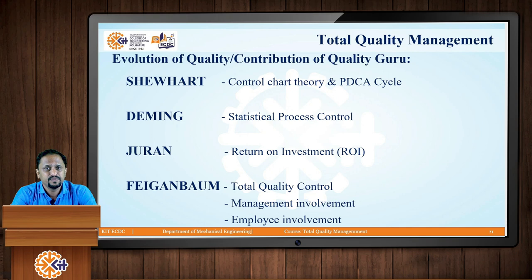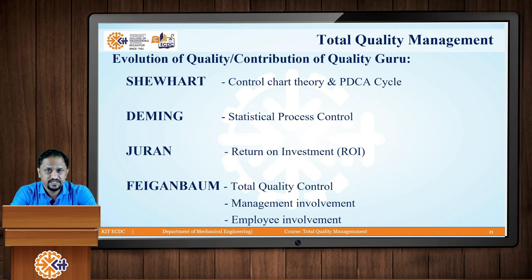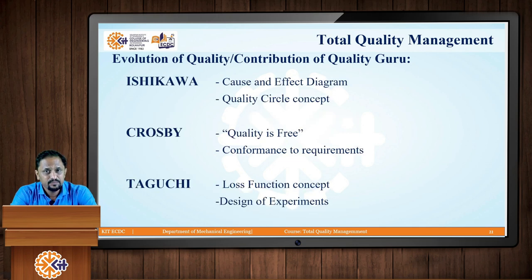Shewhart developed the concept of control chart theory and the PDCA cycle — Plan, Do, Check, and Act. Deming introduced the concept of statistical process control. Juran introduced return on investment — meaning whatever investment you make in developing a product, you should have enough returns on those investments. Feigenbaum developed the concept of total quality control, management involvement, and employee involvement. Ishikawa developed the cause and effect diagram, also called the fishbone diagram due to its typical fishbone structure, and also introduced the concept of quality circles.